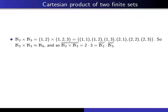Finally, let's talk about Cartesian products of finite sets, beginning with an example. N₂ contains the natural numbers 1 and 2, and N₃ contains 1, 2, and 3. Taking all pairs — one from each — gives 6 elements. Therefore the Cartesian product N₂ × N₃ has the same cardinality as N₆, and its cardinality is 2 times 3, which equals 6 — the product of the two cardinalities.